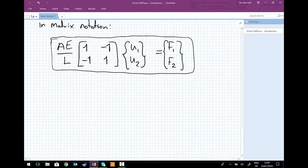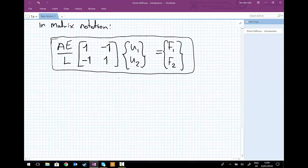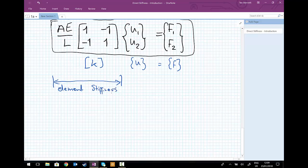So, let's write that down as short. KU equals F. Stiffness times displacement equals force. And so, comparing the two, all of this term here, the AE over L 1 minus 1 minus 1, 1, is what we're going to call an element stiffness matrix.